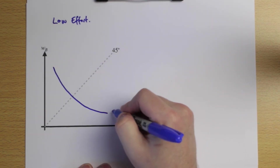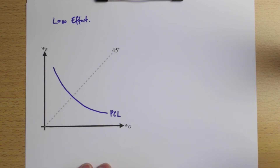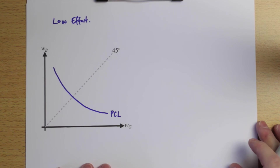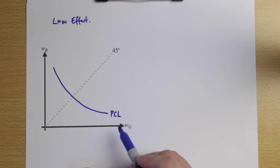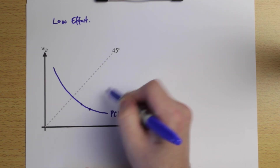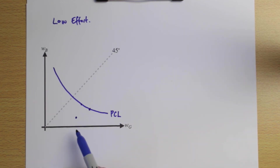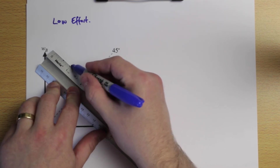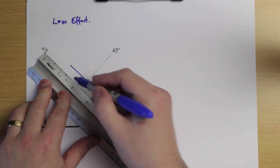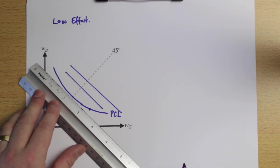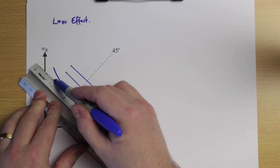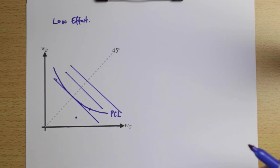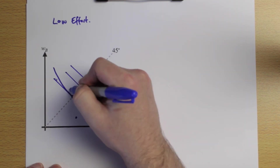Now I'll draw in some ISO cost lines — contracts with the same expected cost. We're trying to get onto the lowest ISO cost possible. We end up with a tangency right on the 45-degree line, which I'll label WL. Our contract WL that optimally implements low effort is two-dimensional — it has a good-state wage and a bad-state wage — so we need two equations to characterize it.